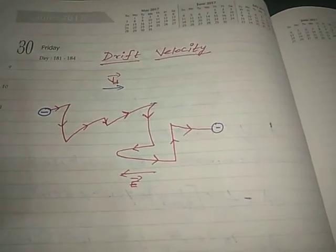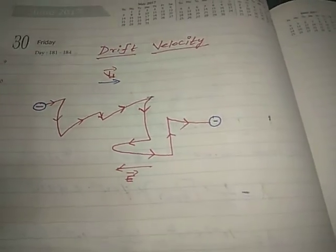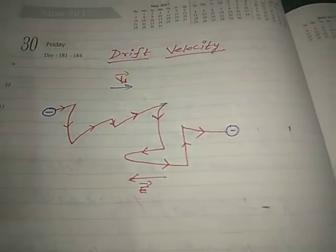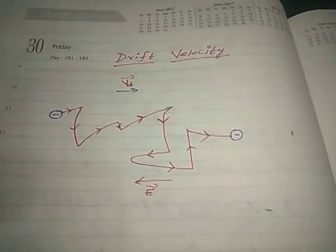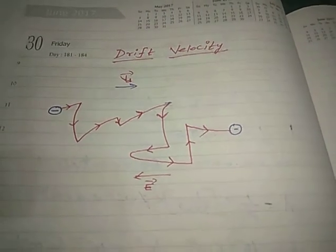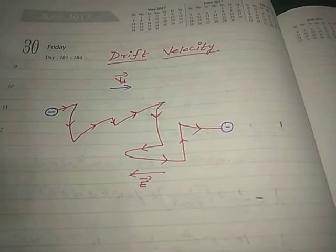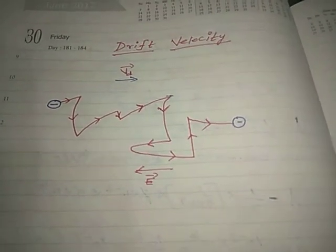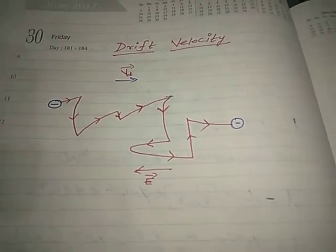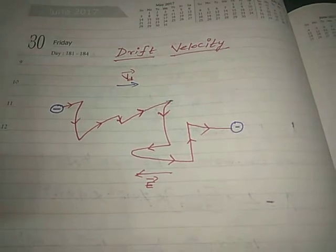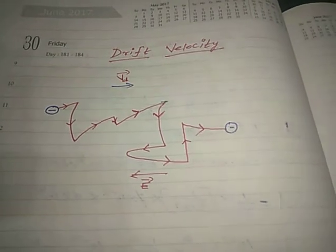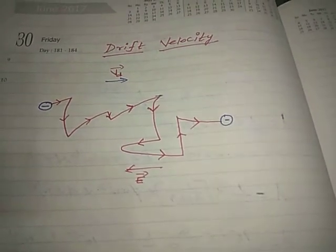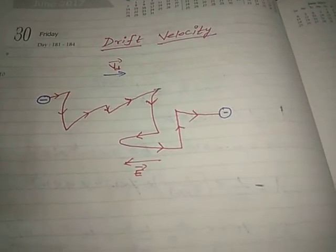In conductors, the charge carriers are electrons. The free electrons are responsible for producing electric current in the case of a conductor. Now, as we saw in the last class, without an electric field applied, the free electrons are in random motion.